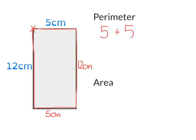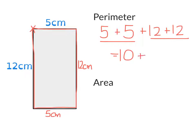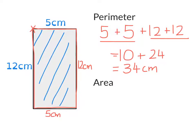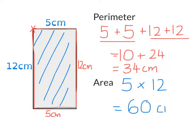So the perimeter will be 5 centimeters plus 5 centimeters plus 12 centimeters plus 12 centimeters. Two 5s give 10, two 12s give 24, and adding those together gives a perimeter of 34 centimeters. For area, all we've got to do is multiply one length by the other, so it will be 5 times 12, and the area will be 60 centimeters squared. Area is measured in squared measurements, whether it's centimeters, meters, or kilometers.